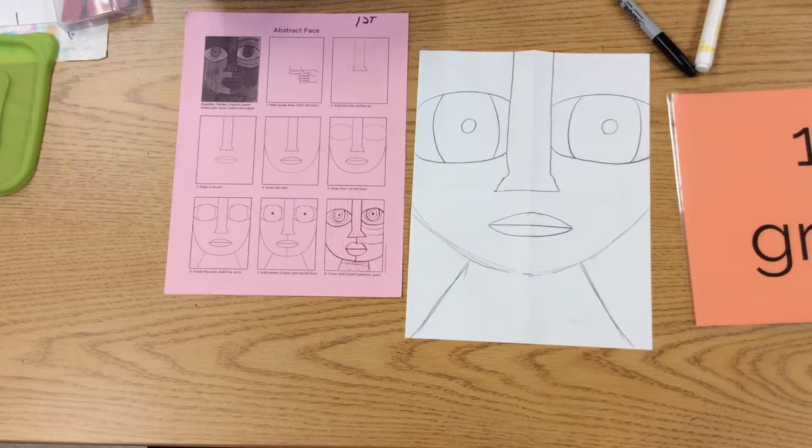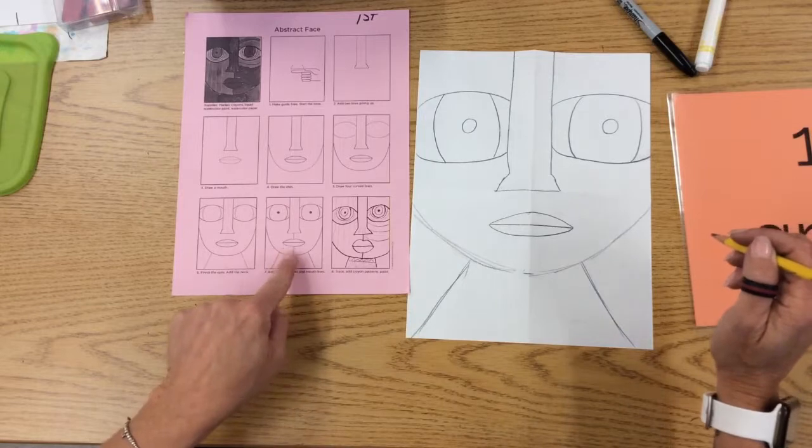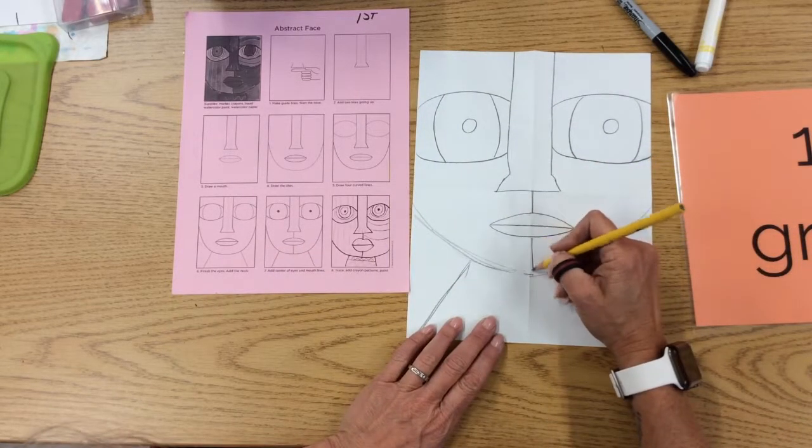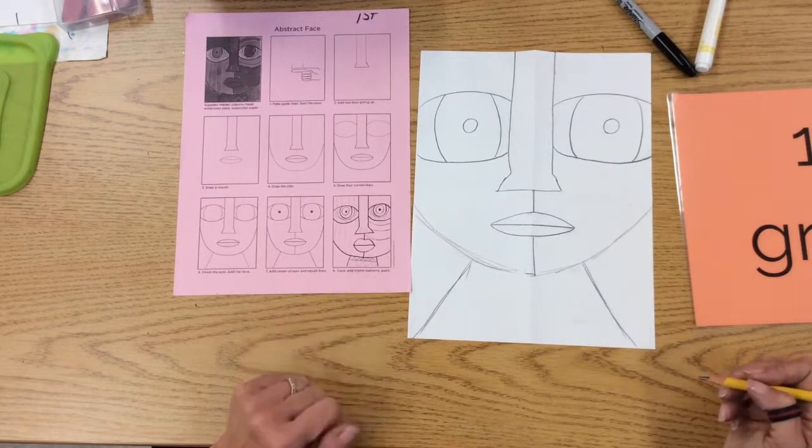Now remember, this is not my sheet, this is something I found on the internet, but I like to use these step-by-step drawings. Next step here: crease underneath the nose, crease underneath the chin. Then it says trace, add color, patterns, and paint.